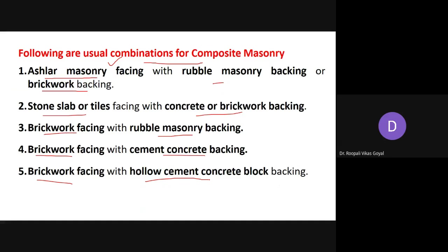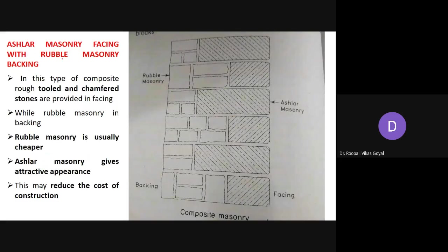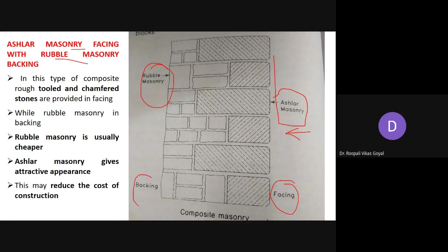On the front side, whatever masonry gives good appearance and durability is provided, while inferior quality or costly material is utilized on the back side in smaller quantity. In the first combination — ashlar masonry facing with rubble masonry backing — you can see on the facing side from the front elevation it is ashlar masonry, giving good appearance, while on the back side rubble masonry is used, which does not have the same appearance as ashlar masonry.